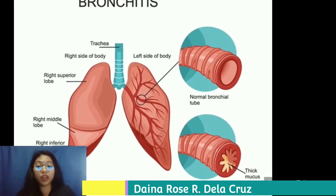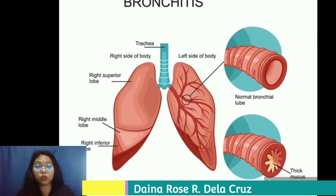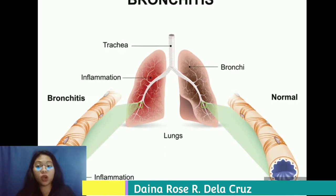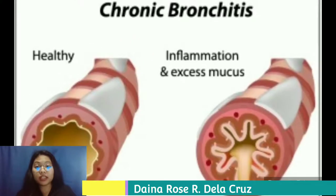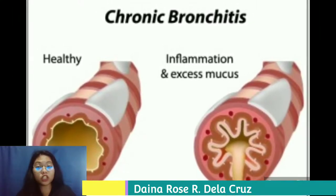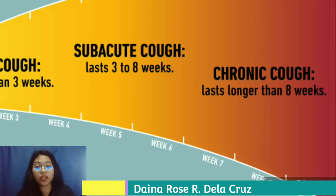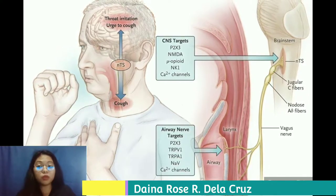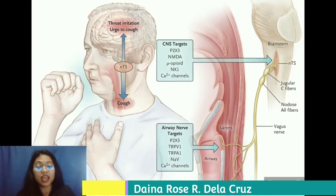Bronchitis is an inflammation of the lining of the bronchial tubes, which carry air to and from our lungs. People with bronchitis often cough up thickened mucus, which can be discolored. Bronchitis may be acute or chronic. Acute bronchitis is very common, while chronic bronchitis is a more serious condition — a constant irritation or inflammation often due to smoking. Chronic cough is a cough lasting 8 weeks or longer in adults or 4 weeks in children. Severe cases can cause vomiting, lightheadedness, and even rib fractures.